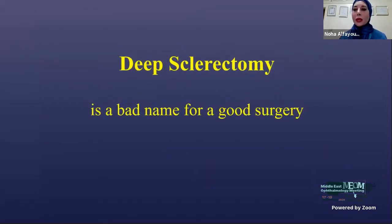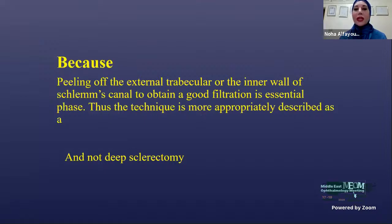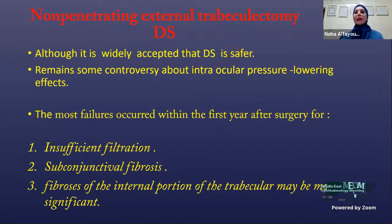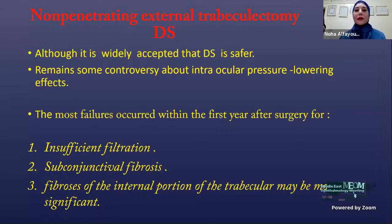Deep sclerectomy is a bad name for a good surgery. Because peeling off the external trabecular of the inner wall of Schlemm's canal to obtain good filtration is the essential step. Thus, the technique is more appropriately described as non-penetrating external trabeculectomy. It is widely accepted that deep sclerectomy is safer, but there remains controversy about IOP-lowering effects. Most failures occur within the first year after surgery due to insufficient filtration, subconjunctival fibrosis, and fibrosis of the internal portion of the trabeculum.